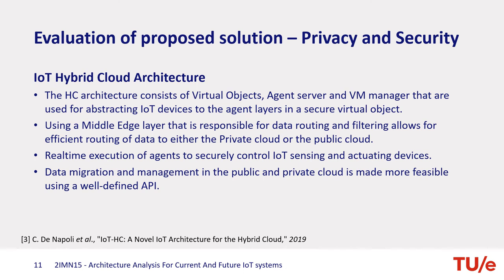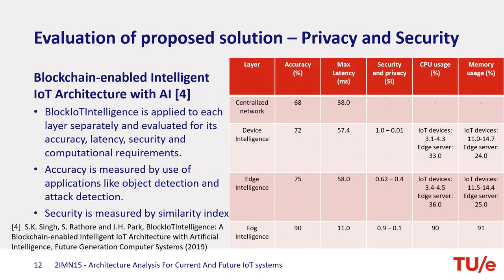No quantitative results were provided for this research. The paper evaluates the blockchain AI network on different layers in an IoT system. The evaluation is based on accuracy of an object detection application, the similarity index for security, latency, and computational utilization. The results can be seen in the table provided. It can be observed that the higher the layer used for decentralization, the higher the accuracy and the lower the latency. However, this is less secure as the decentralization is not as effective as it is at the device layer level. Compared to a normal centralized network, the accuracy and security of the application are overall better, but the latency is worse.